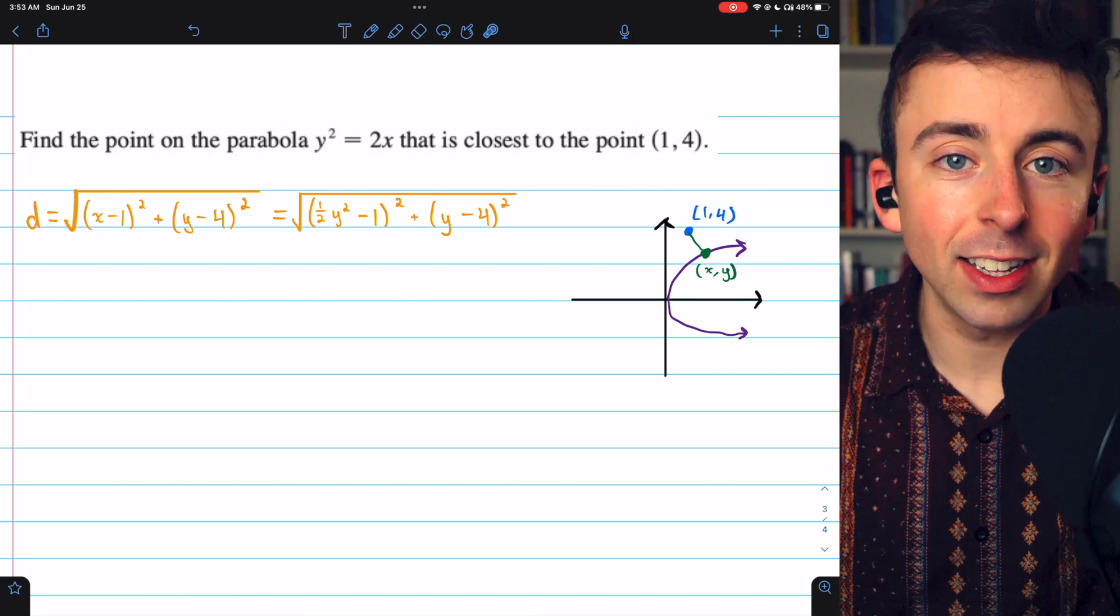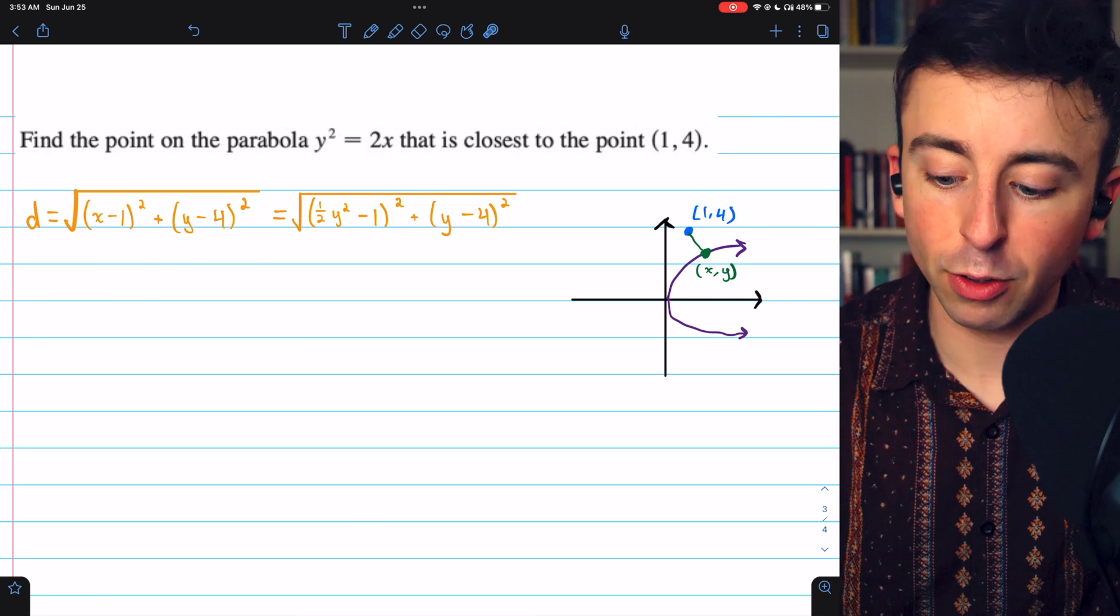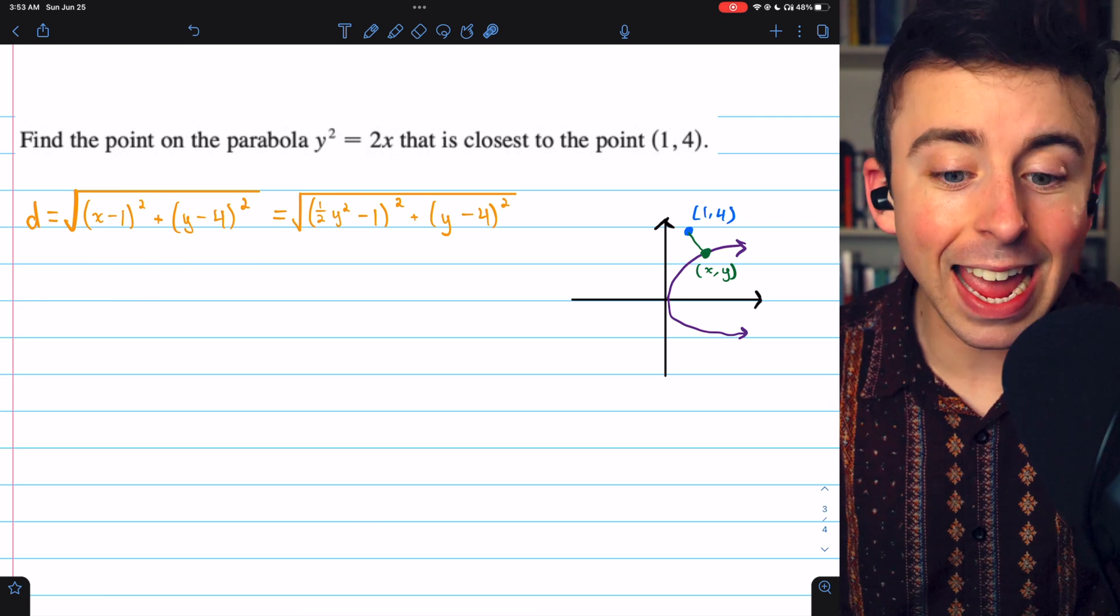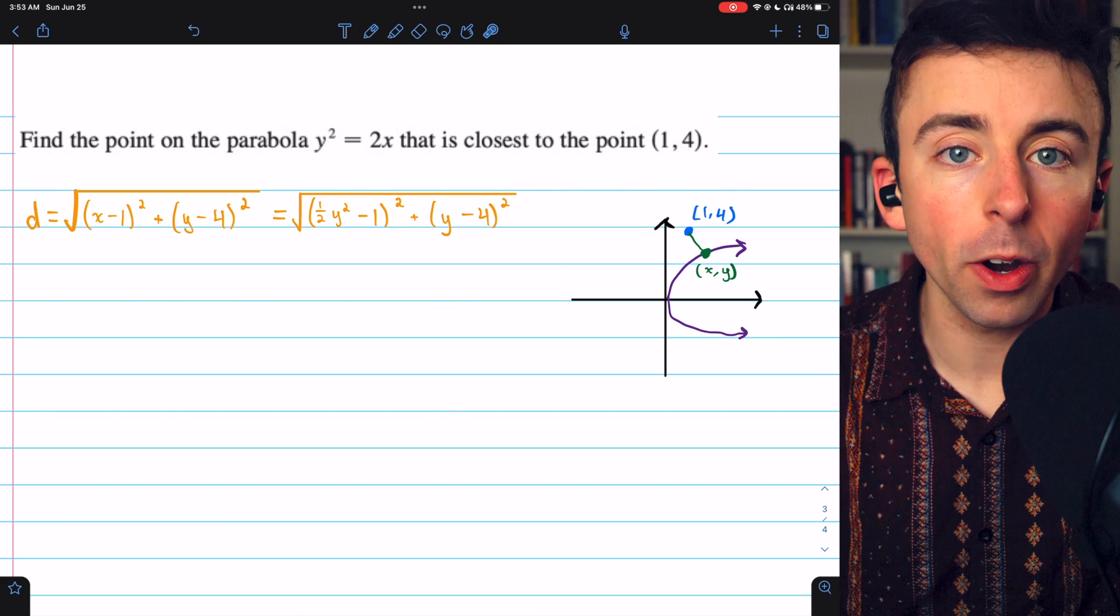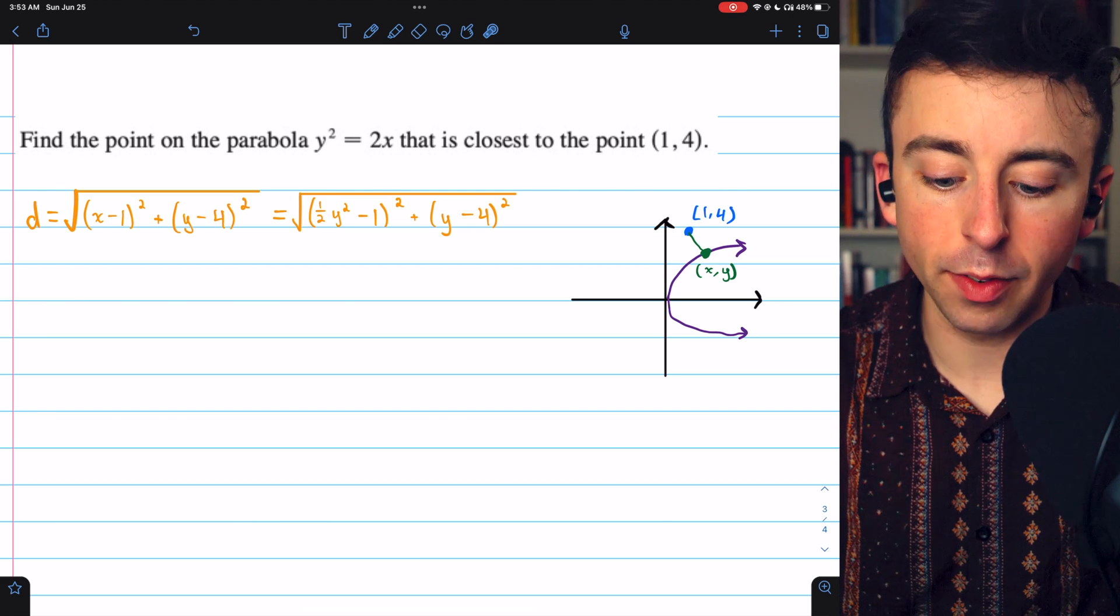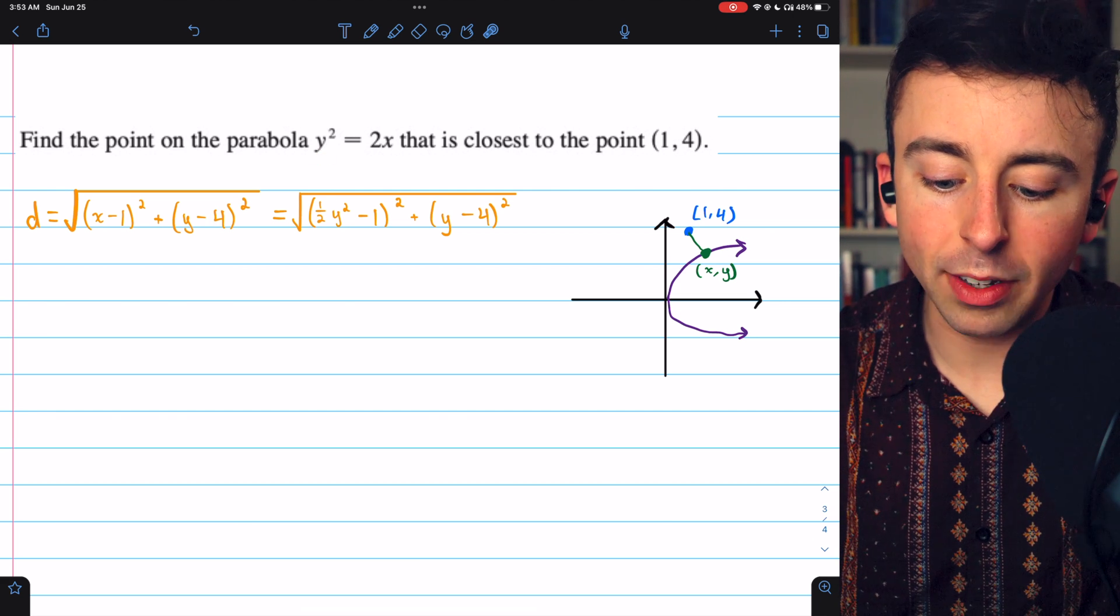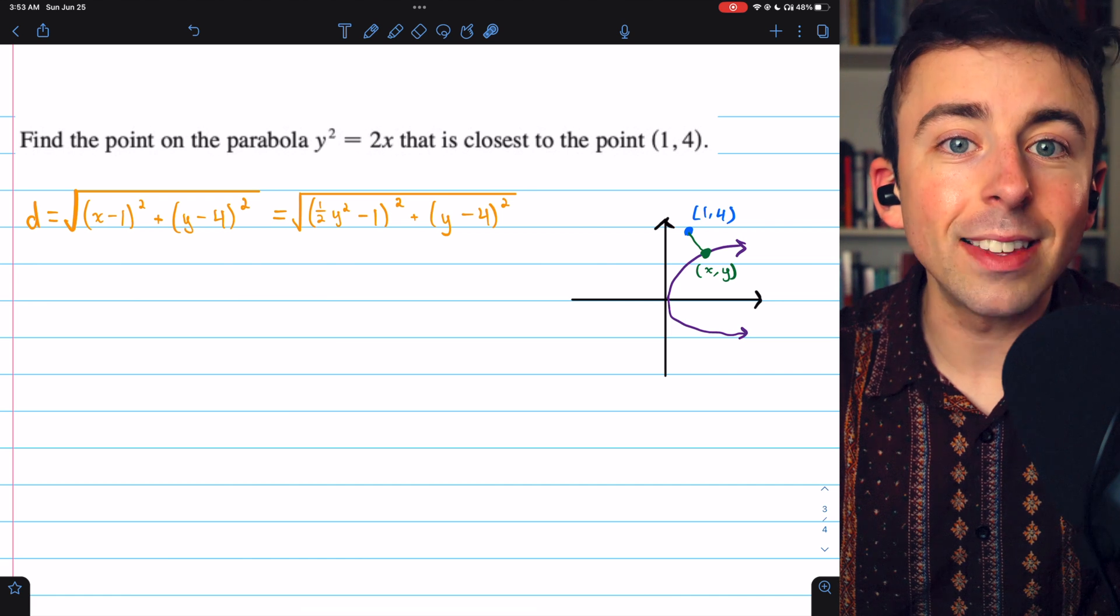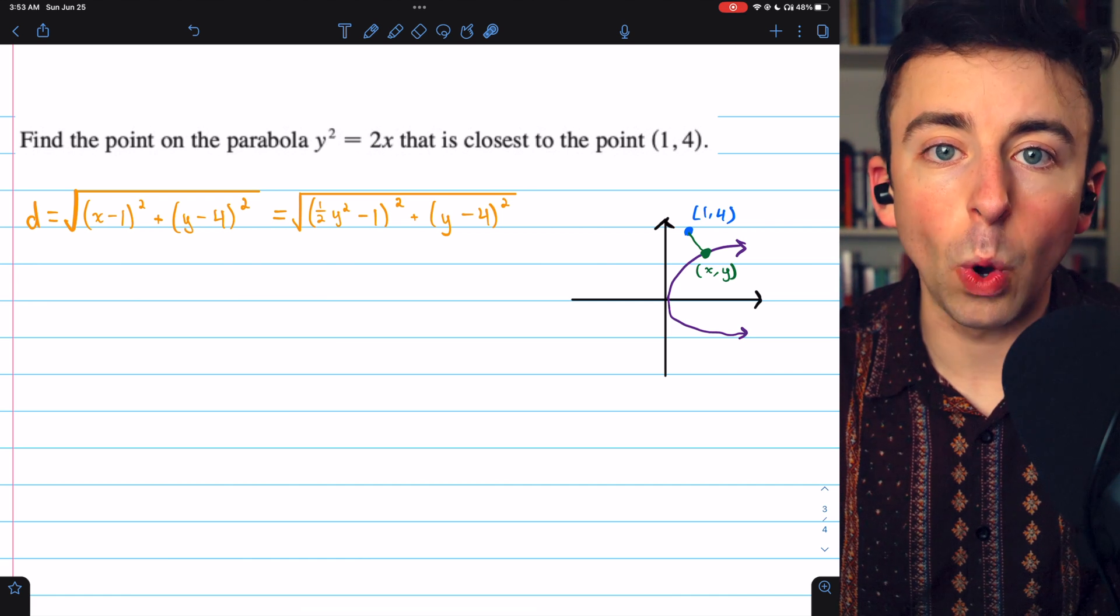Again, this is just the distance between an arbitrary point (x,y) on the parabola and the point (1,4). To put this equation in terms of a single variable, well, we know that y squared equals 2x, which means x equals one half y squared.